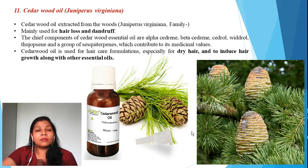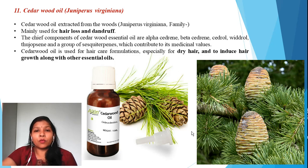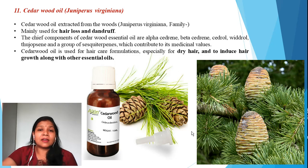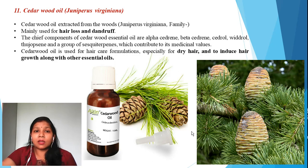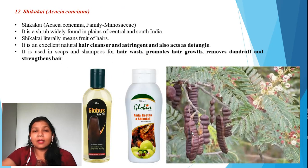The eleventh ingredient is cedarwood oil, derived from the plant Juniperus virginiana. The oil is extracted from the cedar wood. It contains essential oil compounds such as alpha-cedrene, beta-cedrene, cedrol, and widdrol, along with sesquiterpenes that contribute to its medicinal values. Cedarwood oil is mainly used for people with dry hair tendency — it can be massaged on the scalp to induce hair growth.